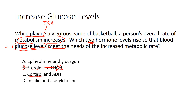Option C mentions cortisol — I'll circle cortisol because we know it does cause proteins to be broken down into amino acids, which are then converted into glucose, so that part is true. But the second half of option C says ADH. ADH has to do with when the body is dehydrated and blood pressure is low — it signals the kidney to reabsorb more water to rehydrate the body. We never talked about ADH in relation to glucose levels. Because that second part doesn't fit, we can eliminate this option, even though cortisol's ability to raise glucose is true.